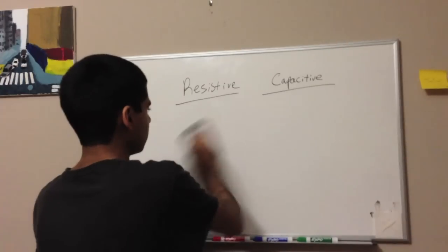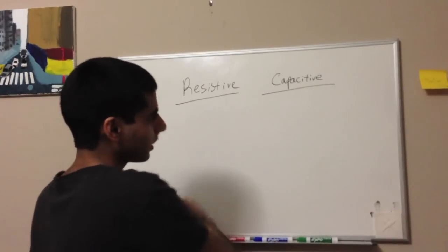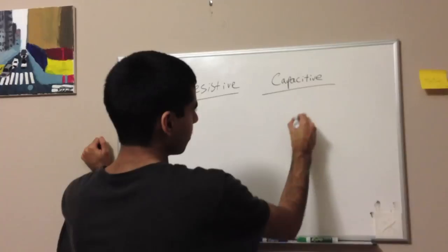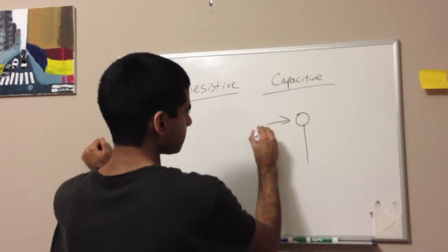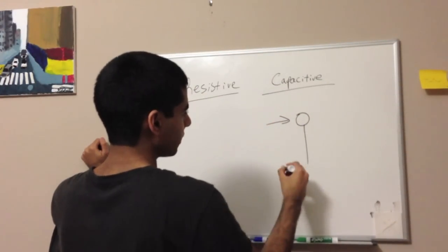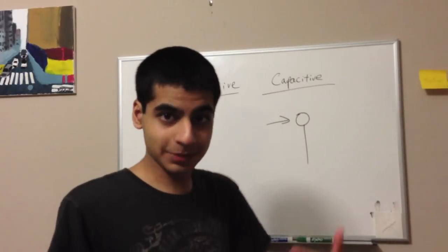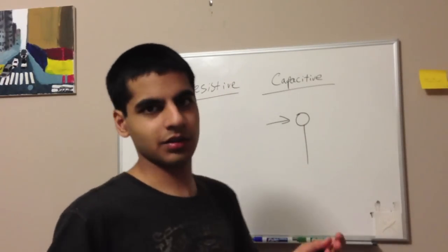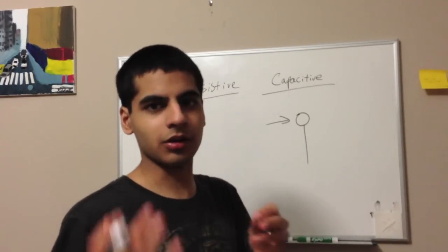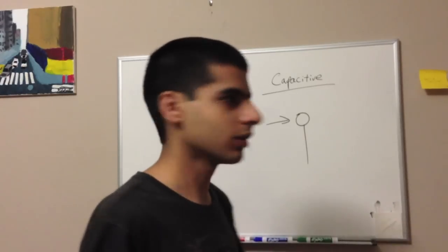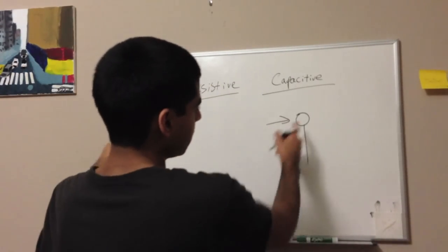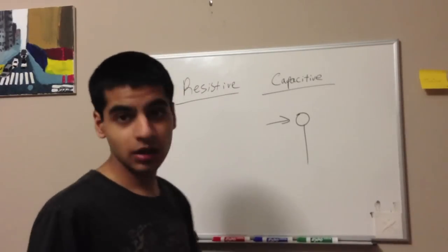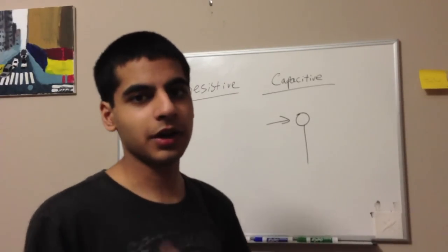The capacitive one works where you have one thing to touch, and when you touch it, you increase the capacitance because the human body acts like a capacitor. Their skin is like an insulator and our organs and blood and all that is like a conductor. So we basically act like a capacitor, and you only need one point for this, so that's one inherent benefit that capacitive touch sensors have.